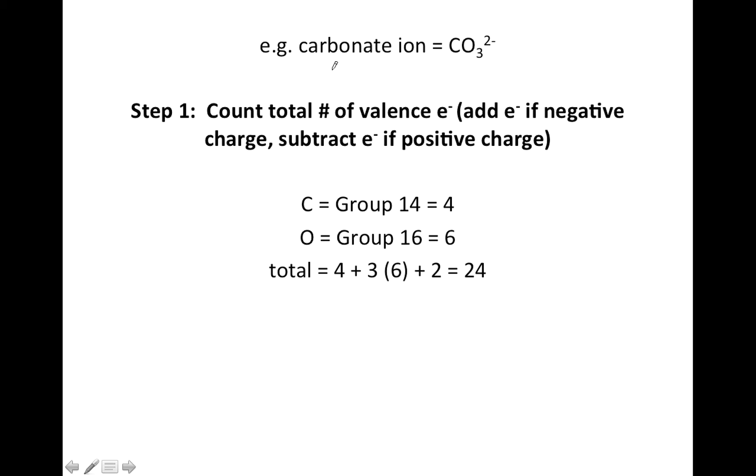Let's do an example now of a polyatomic ion, carbonate, CO3 2-. Step 1, count total valence, but remember we're going to add electrons since we have a negative charge.